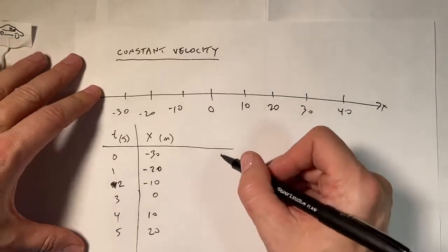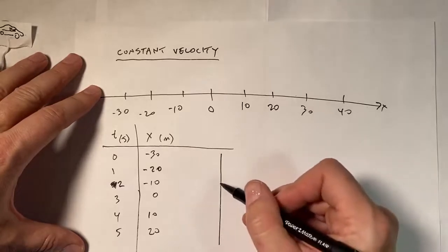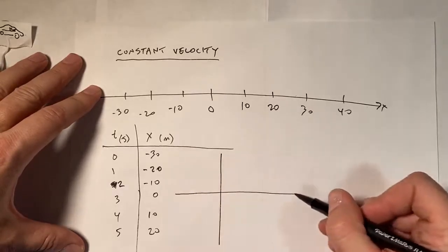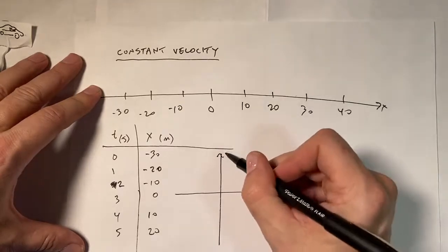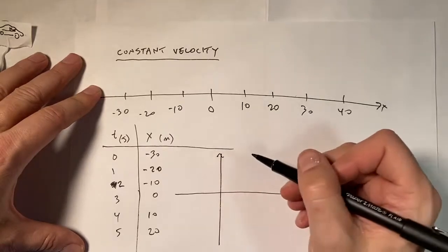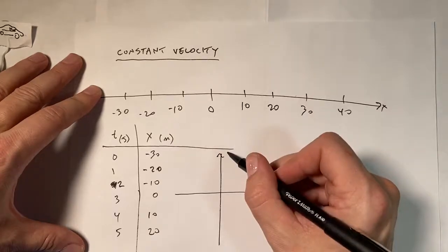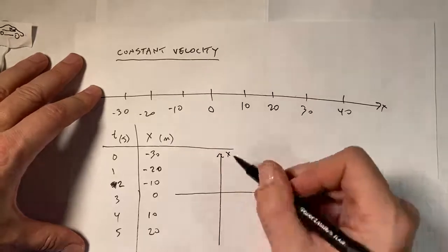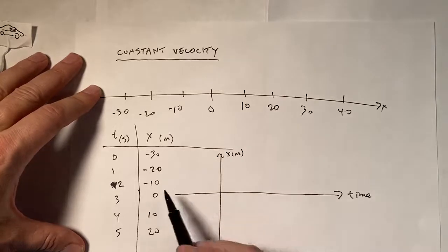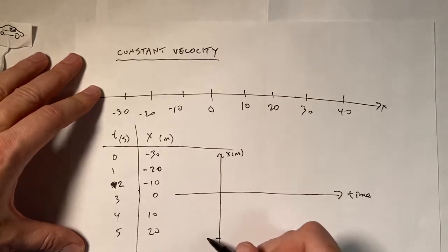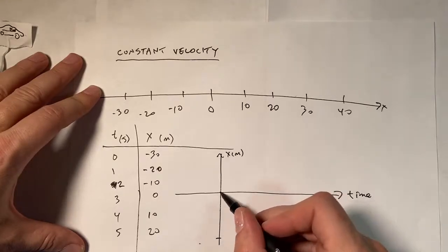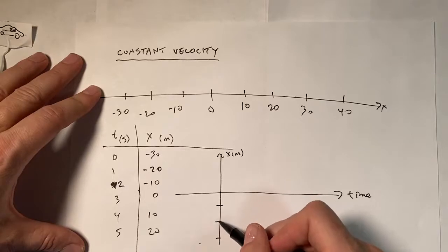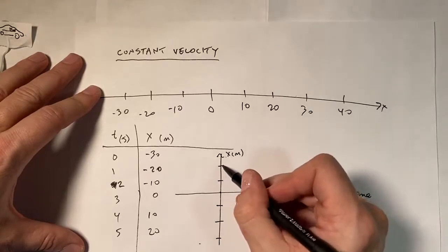So now let's suppose that I wanted to make a graph of this motion. This will be time. And this will be position in meters. So it starts down here at t equals zero. It starts at negative 30. Let's see, it's to zero, negative 10, negative 20, 10, 20. Okay.